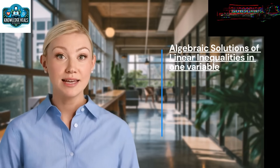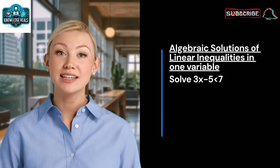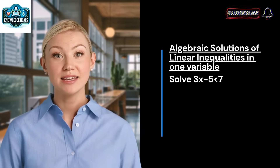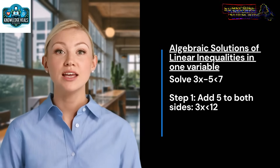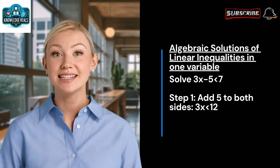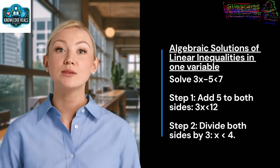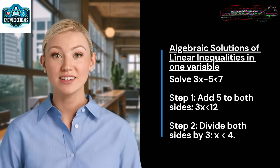Let's look at an example. Solve 3x − 5 < 7. Step 1: add 5 to both sides, giving 3x < 12. Step 2: divide both sides by 3, giving x < 4.